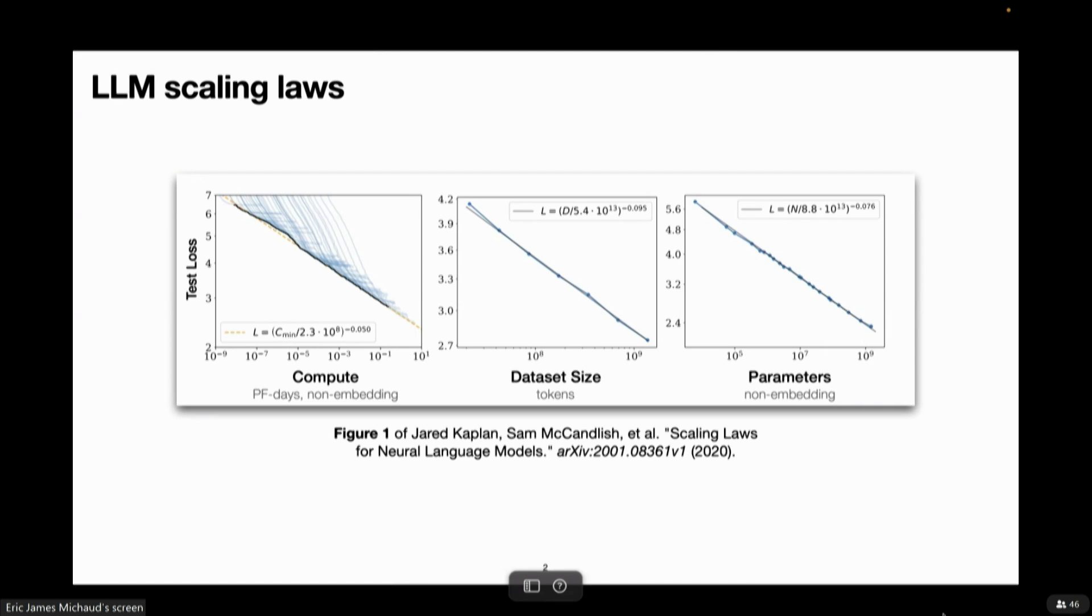In that in the aggregate, the mean error, the mean test loss of these systems decreases predictably as a power law in the amount of data that they're trained on and the size of the networks. And so we'd like to understand where these power laws come from.